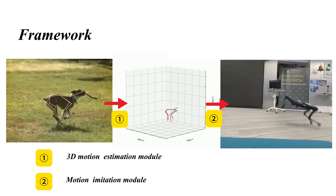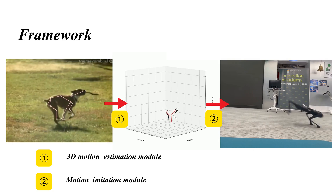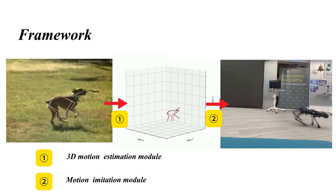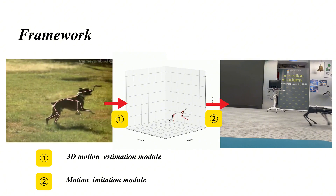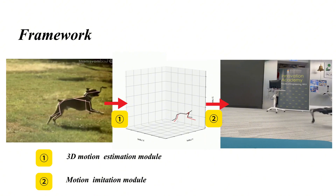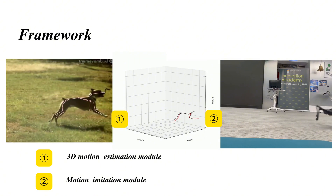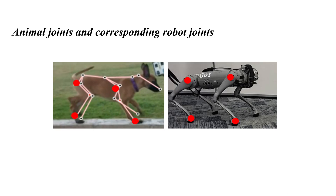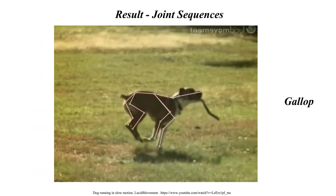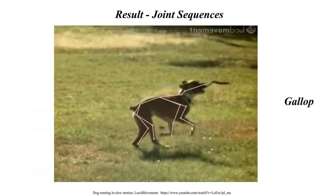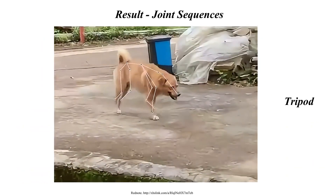We split the pipeline into two components. The 3D motion estimation module takes monocular videos as input and produces a 3D reconstruction of animal motions. We leverage a DeepLabCut pose estimation model to detect self-selected key points and integrate outlier refinement techniques to improve the continuity of joint sequences.